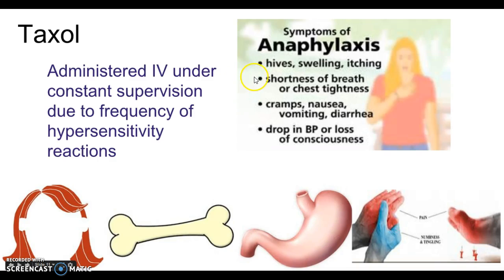Symptoms of anaphylaxis: hives, swelling, itching, shortness of breath, and chest tightness, that's a biggie with taxol, cramps, nausea, vomiting, diarrhea. These would be hard to distinguish since that's side effects of everything. And then this drop in blood pressure. So the drop in blood pressure and the chest tightness, shortness of breath, anytime a patient exhibits those signs when they're receiving taxol, it's a pretty big deal. That tells us that we need to stop the medication and do something.